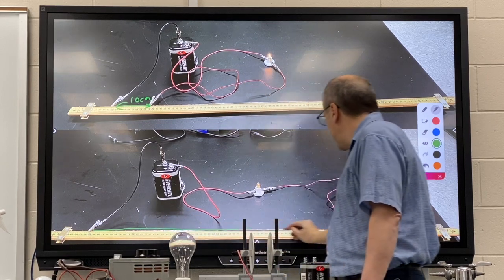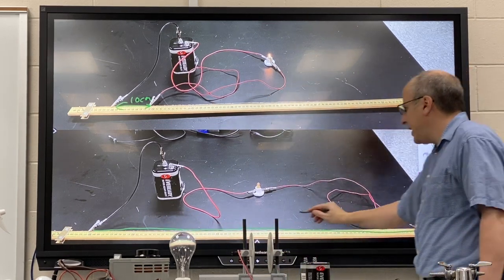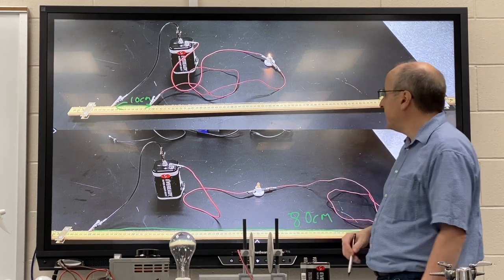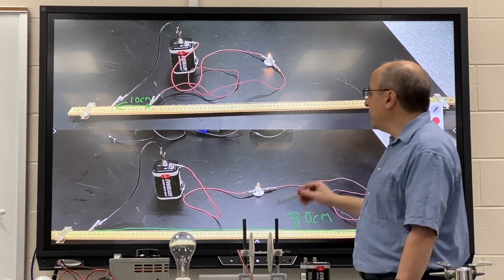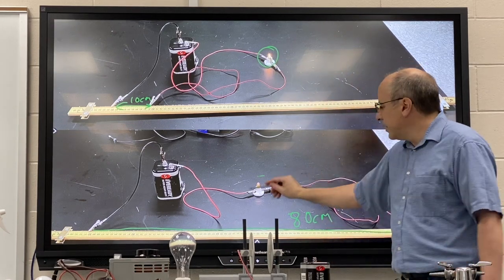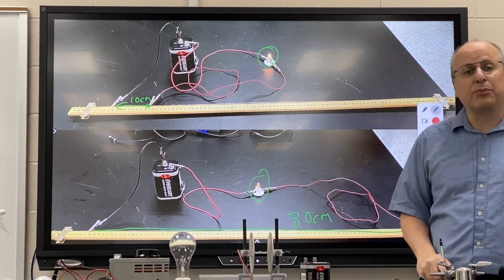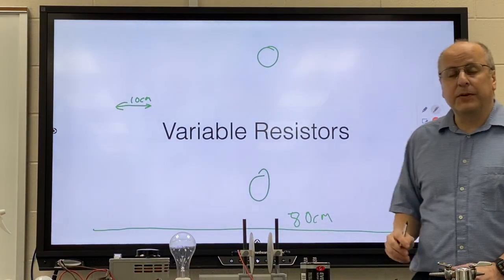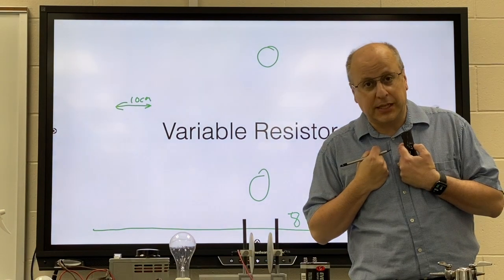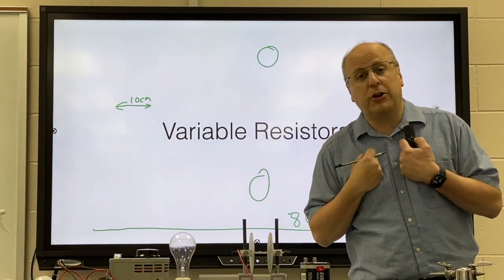And then I'm going to hook it up so I use much more wire, about 80 centimeters of wire. And what you'll notice is when I used a little bit of wire, I had a bright light, and when I used a lot of wire, I had a less bright light. So the point of a variable resistor is to give the user control over resistance by changing the length of wire used.